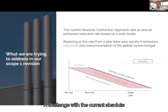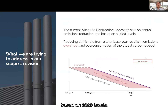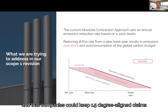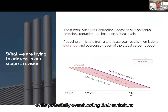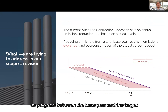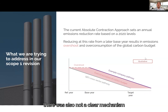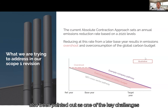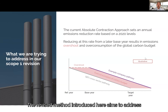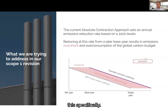A challenge with the current absolute contraction approach is that it is primarily based on a linear reduction rate based on 2020 levels, and that companies could maintain 1.5-degree alignment claims while potentially overshooting their emissions within their interim targets, as progress between the base year and the target year was not tracked in cumulative terms. Another key challenge was that there was also not a clear mechanism to correct for overconsumption of the carbon budget in subsequent targets. This issue has been pointed out as one of the key challenges noted in academic literature on corporate target setting. The revised method introduced here aims to address this specifically.